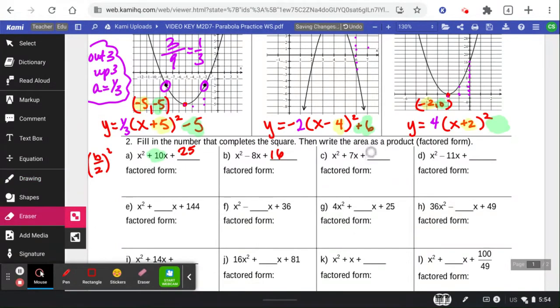Half of 7 is 7 halves. 7 halves squared is 49 fourths.